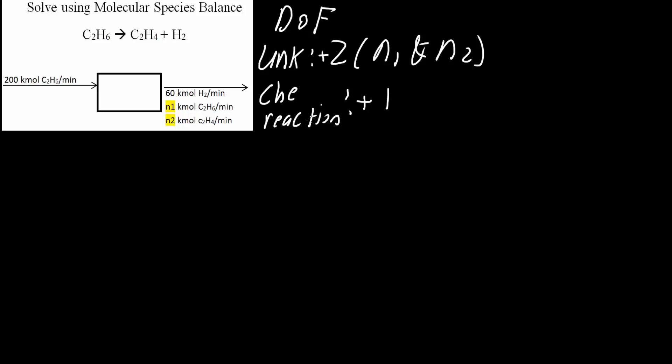And now we need to know how many balances, how many molecular species do we have? We have three: one, two, three. So balances, molecular species balance, we have minus three. So two plus one minus three would give us zero, and so we can solve this problem.